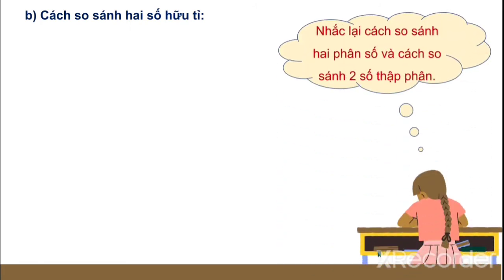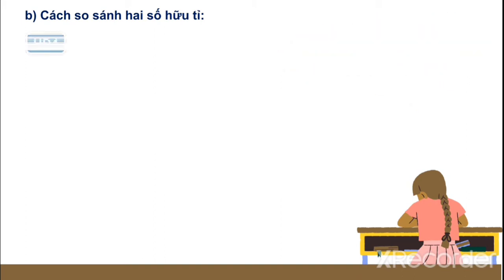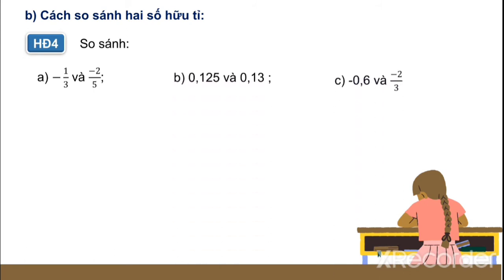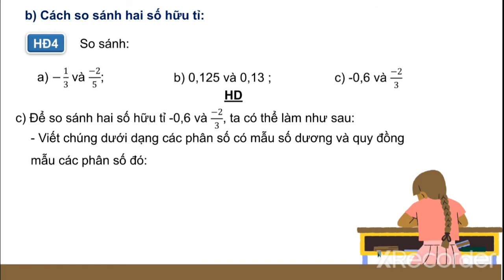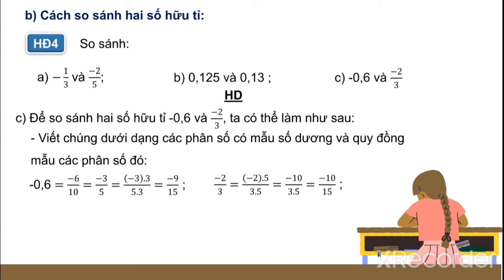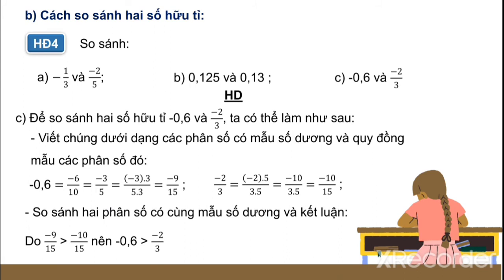Nhắc lại cách so sánh 2 phân số và cách so sánh 2 số thập phân. Tương tự, để so sánh 2 số hữu tỉ: ví dụ âm 1 phần 3 và âm 2 phần 5. Ta so sánh âm 0.6 và âm 2 phần 3 như sau: viết chung dưới dạng phân số có mẫu số dương và quy đồng mẫu số. Ta có âm 0.6 bằng âm 9 phần 15; âm 2 phần 3 bằng âm 10 phần 15. Như vậy âm 9 phần 15 lớn hơn âm 10 phần 15, do vậy âm 0.6 lớn hơn âm 2 phần 3.